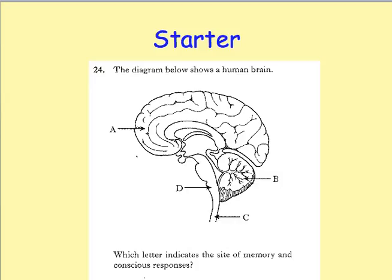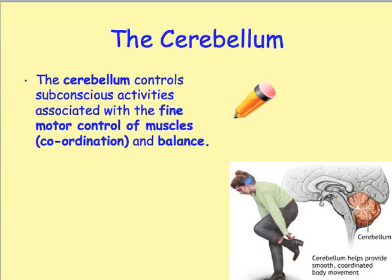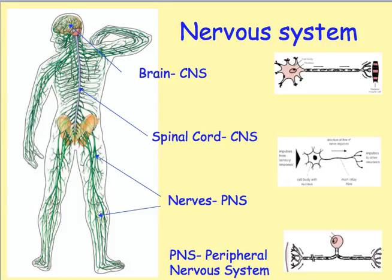Here's a past paper question: which letter indicates the site of memory and conscious responses? The answer would be A, because that is pointing to the cerebrum. B is pointing to the cerebellum, so that would relate to balance or coordination. D is pointing to the medulla, so that would be about heart rate or respiratory rate. And C is pointing to the spinal cord. Make sure in your notes you have a note of these structures and their functions.